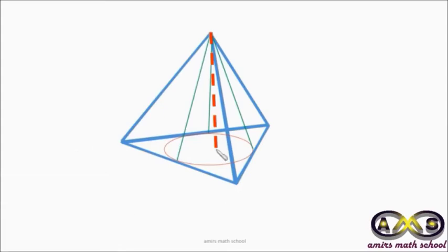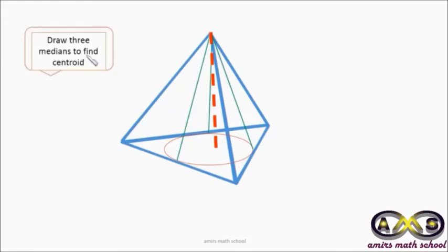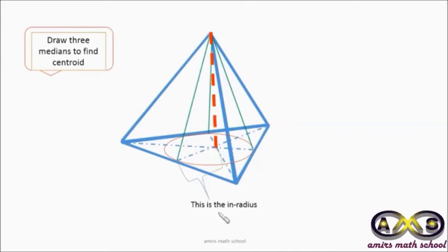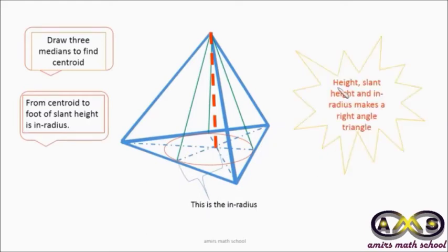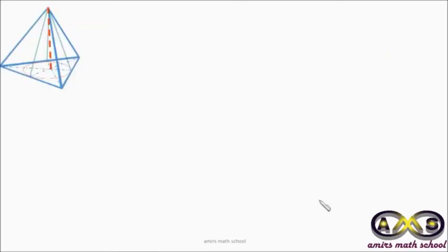Now, how do we find the height of the tetrahedron? The red line shown is the height. To find it, we draw three medians on the base triangle to locate the centroid — the intersecting point of the medians. The distance from the centroid to the foot of the slant height is the inradius. The height, slant height, and inradius form a right-angle triangle.